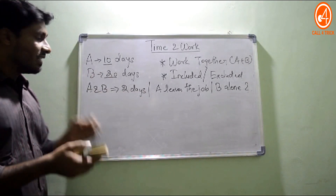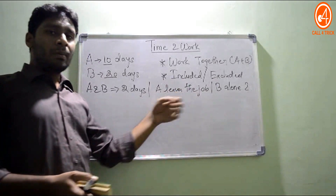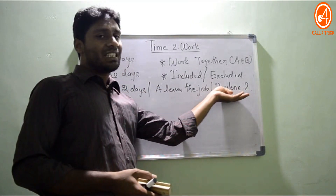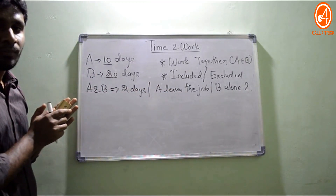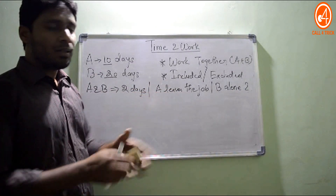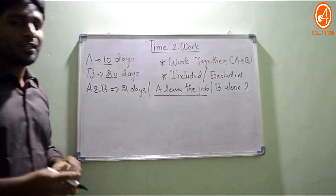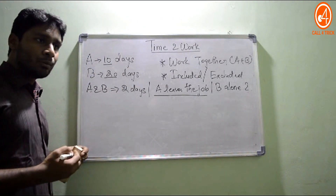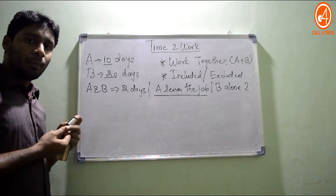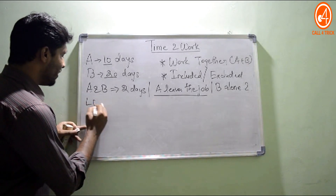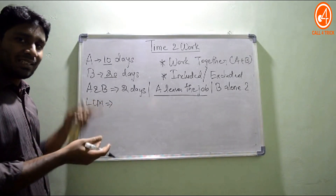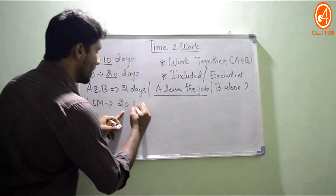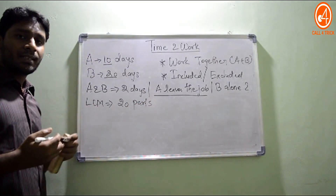A and B are doing the work together for two days. After that span, A is actually leaving the job and the remaining work is done by B alone, since A is no longer there. Now, what is the first step in the LCM method for Time and Work? Taking the LCM. Here the LCM of 10 and 20 is 20, so the total work is 20 parts.